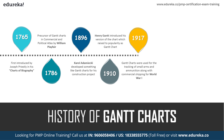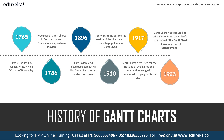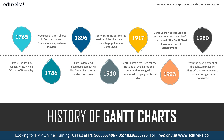Gantt charts were used for tracking small arms and ammunition along with commercial shipping for World War I, during 1917. Later, the Gantt chart was first used as an official term in Wallace Clark's book named 'The Gantt Chart: A Working Tool of Management' during 1923. During 1980, with the development of the software industry, Gantt charts experienced a sudden resurgence in popularity. Since Gantt charts provide a visual representation, it is always easy to understand them correctly with less misunderstanding or misinterpretation.